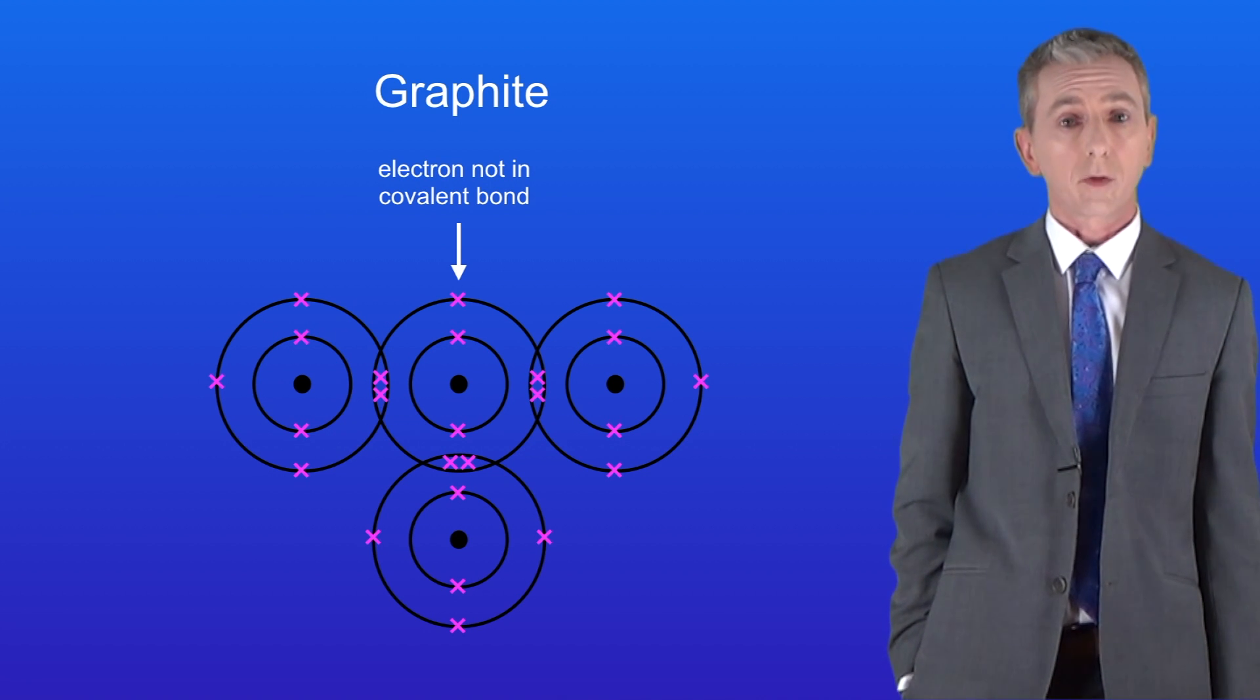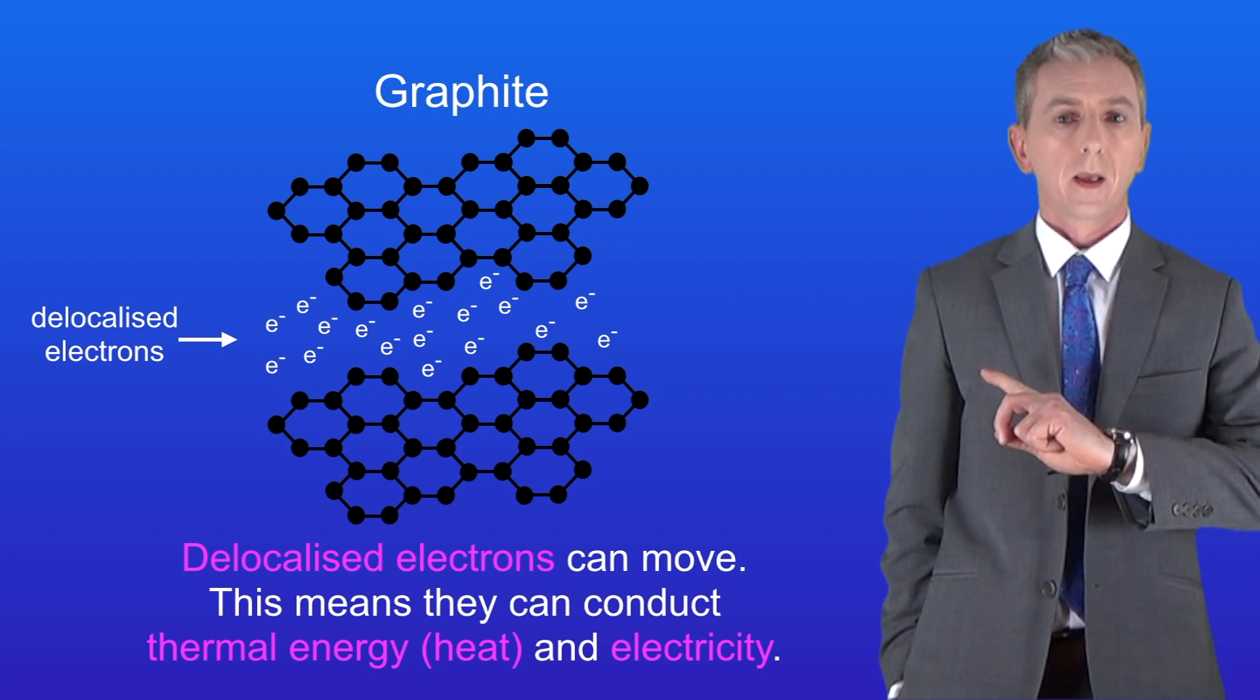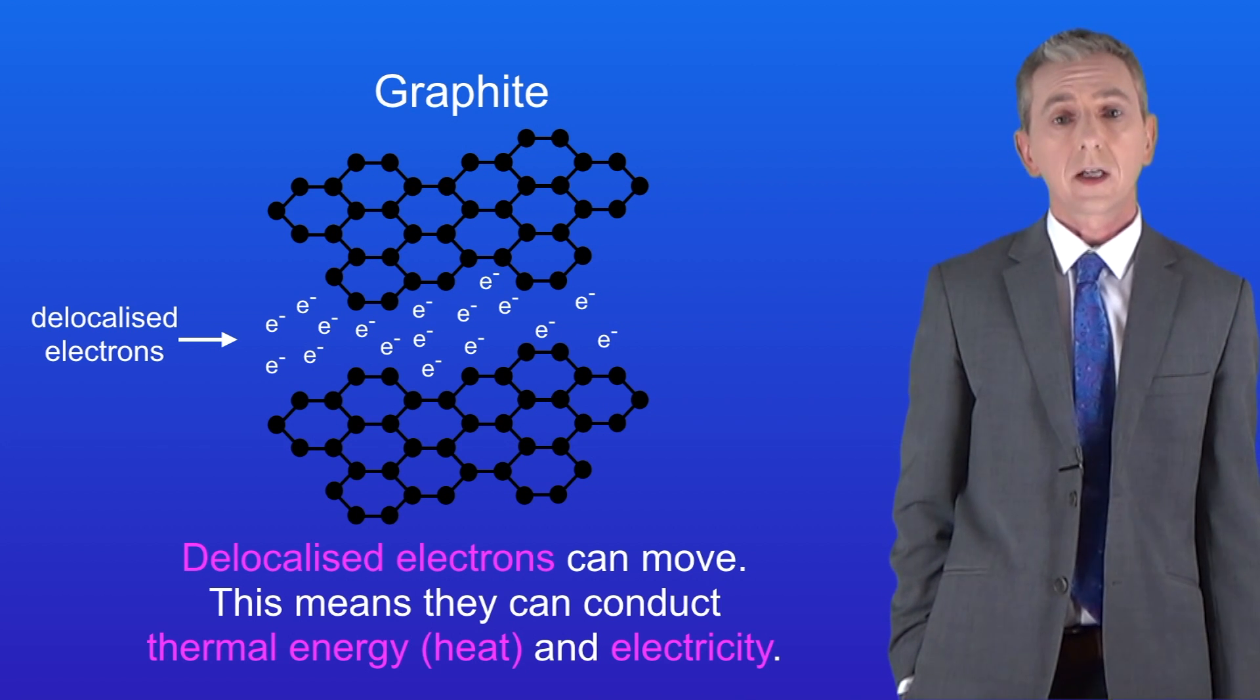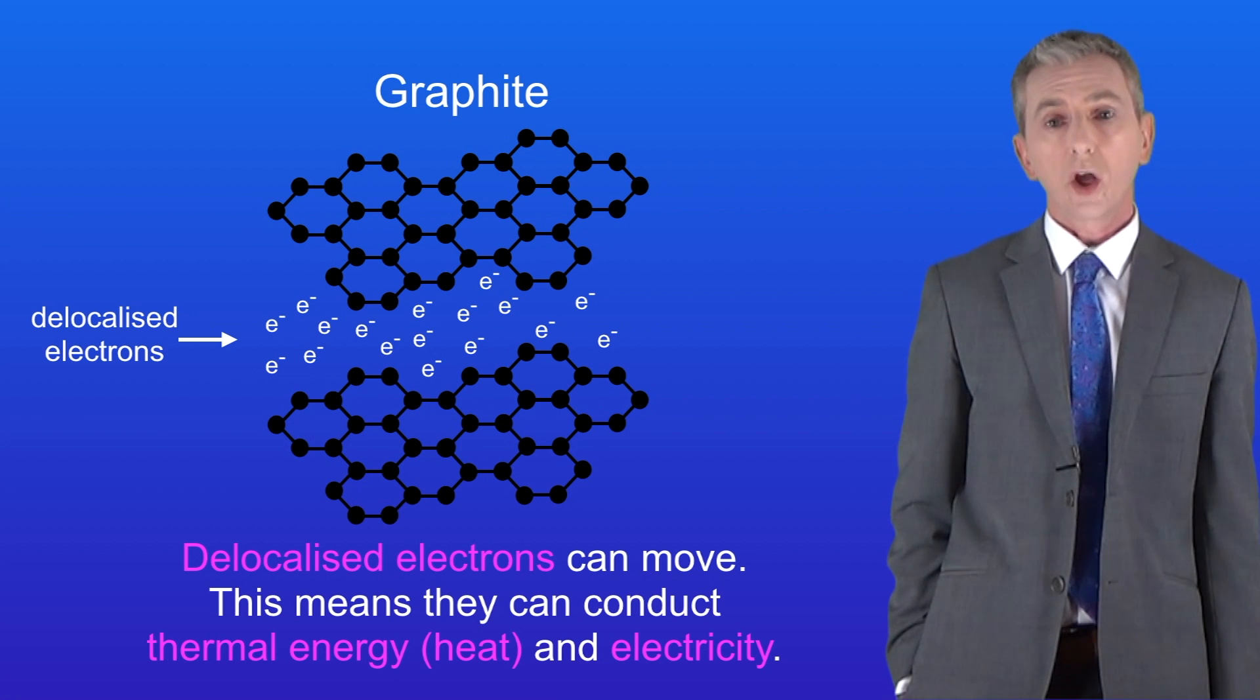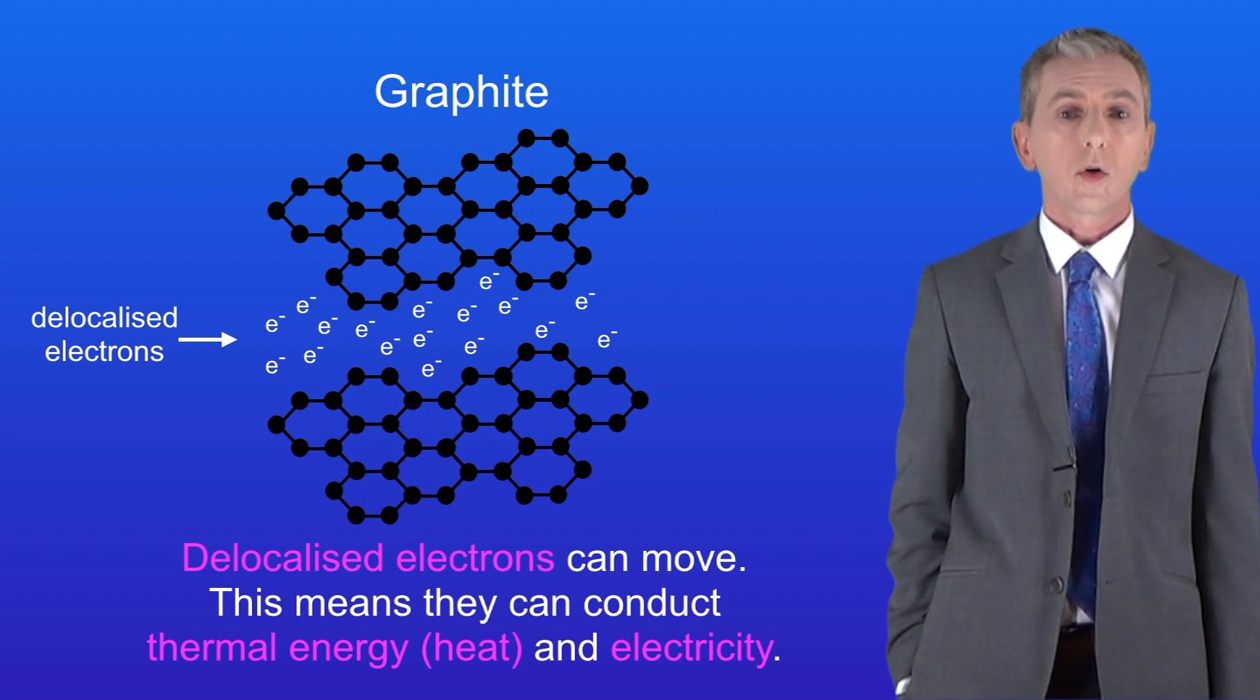These electrons are released from the carbon atoms and scientists call these delocalized electrons. I'm showing you the delocalized electrons here. Now the key fact is that these delocalized electrons can move. This means that they can conduct thermal energy in other words heat and also electricity.